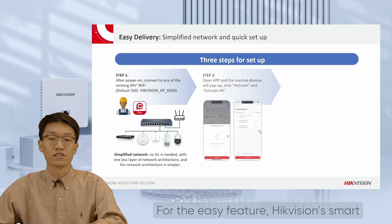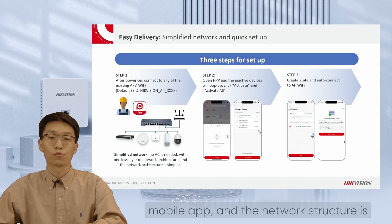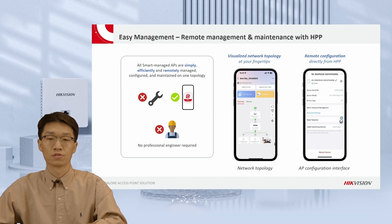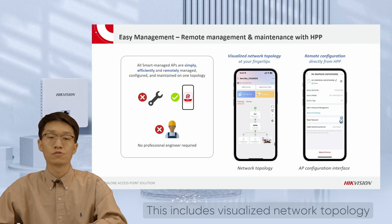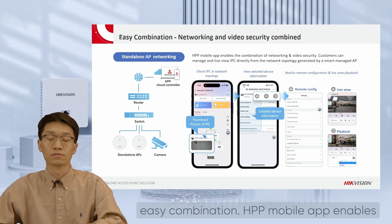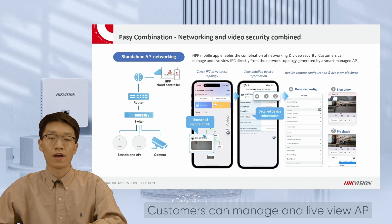For the Easy feature, HackerVision's Smart Managed AP provides easy delivery to customers, meaning customers only need three steps to set it up with the HPP mobile app, and the network structure is simplified as the AC router is no longer necessary. HackerVision's Smart Managed AP also provides easy management, enabling users to do remote management and maintenance with HPP mobile app, including visualized network topology and direct configuration at your fingertips. HackerVision's Smart Managed AP also comes with easy combination — the HPP mobile app enables a combination of networking and video security, so customers can manage and live-view IP cameras directly from the network topology generated by Smart Managed AP.